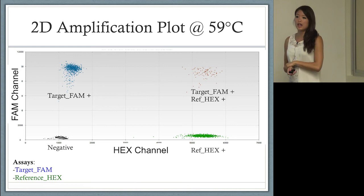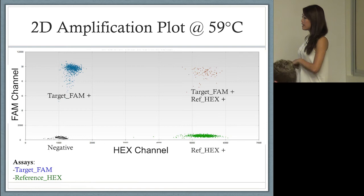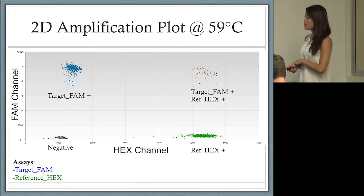Another way to see if your assay is optimized is to look at the 2D amplification plot. We have one target assay that has a FAM probe and our reference has a HEX probe. You have your negative droplets clustering here, droplets that don't have any target or amplicons.